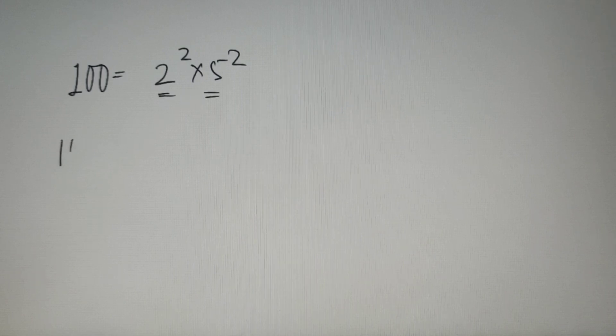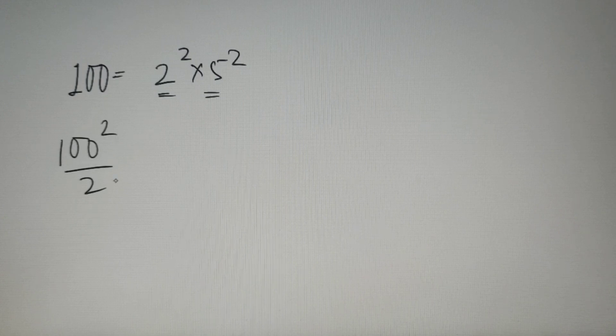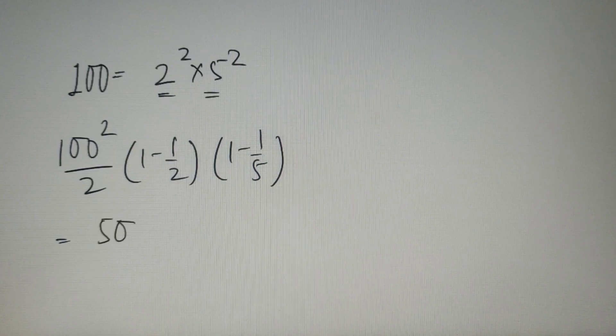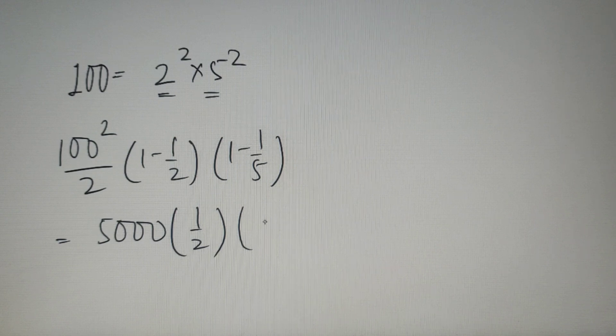So according to our formula the value is equal to 100 square whole divided by 2 into (1 minus 1 by 2) into (1 minus 1 by 5). Now we have to calculate this value. Now 100 square by 2 is equal to 5000 and 1 minus 1 by 2 is equivalent to 1 by 2 and 1 minus 1 by 5 is equivalent to 4 by 5.